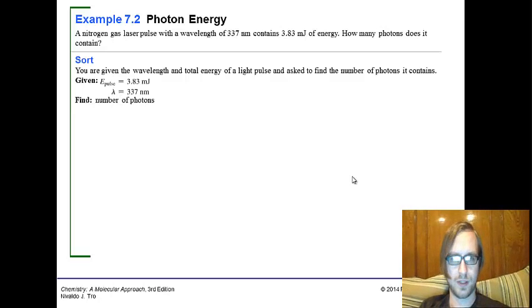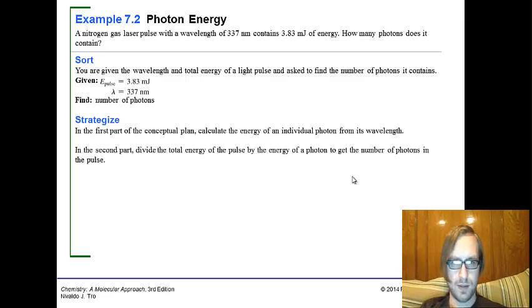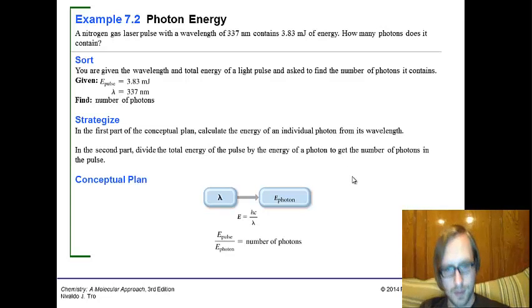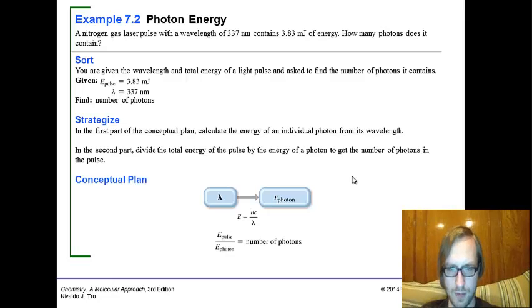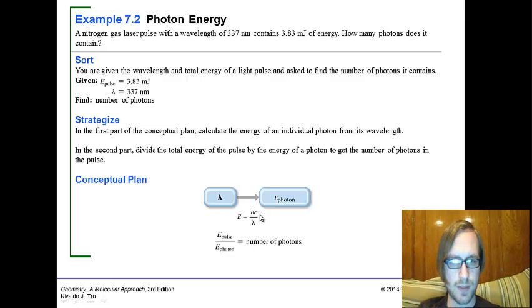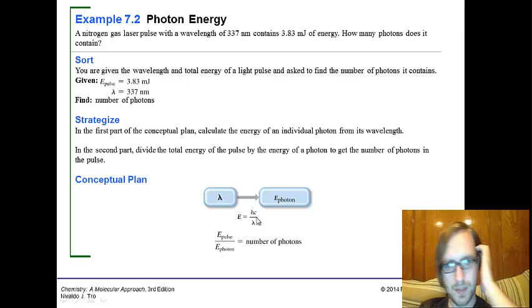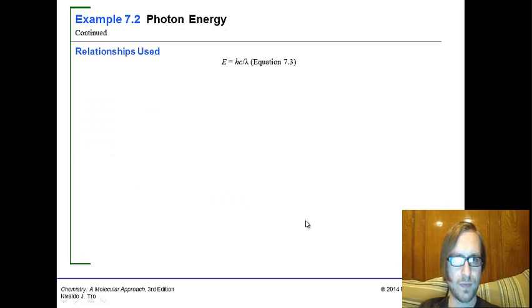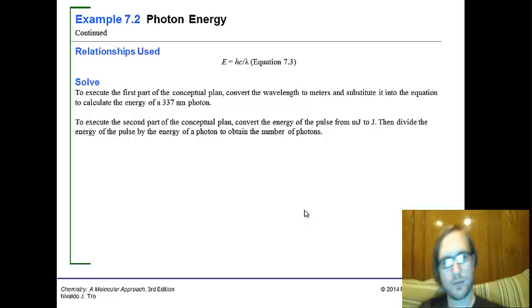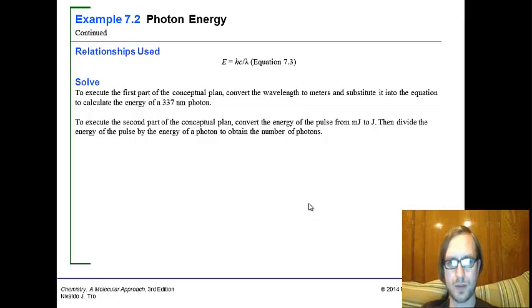So we're given the wavelength and total energy. We're going to calculate the energy of a single photon, then divide the total energy of the pulse by the energy per photon to calculate the number of photons. Here's our plan. Energy is H, Planck's constant, times frequency. I say frequency, though it's written speed of light over wavelength, because C divided by wavelength gives the frequency for E equals hν.